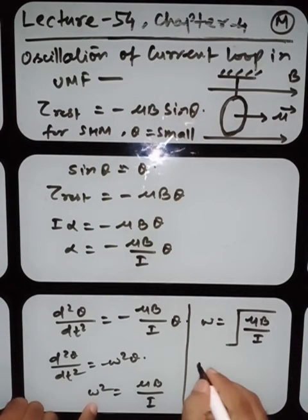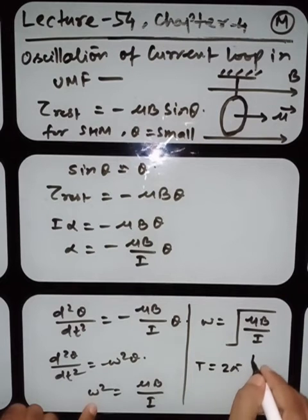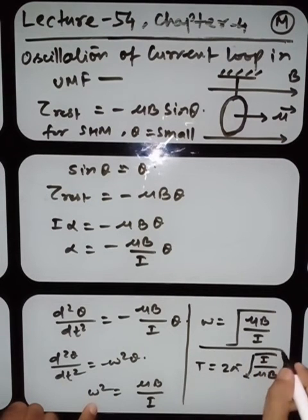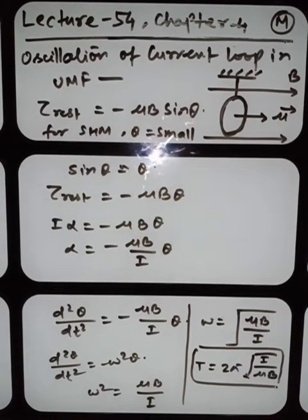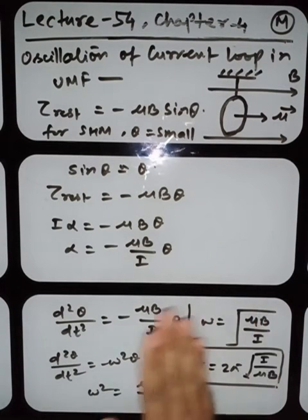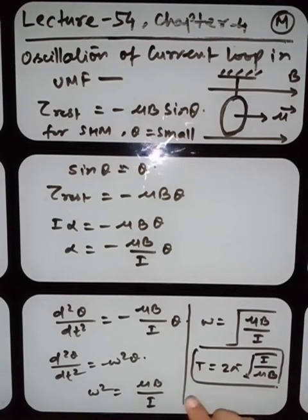Successfully we obtained the time period. If any current-carrying conductor is placed in a magnetic field, it will oscillate like simple harmonic motion, and the time period will be T = 2π√(I/μB), where I is the moment of inertia, μ is the magnetic dipole moment, and B is the magnetic field.